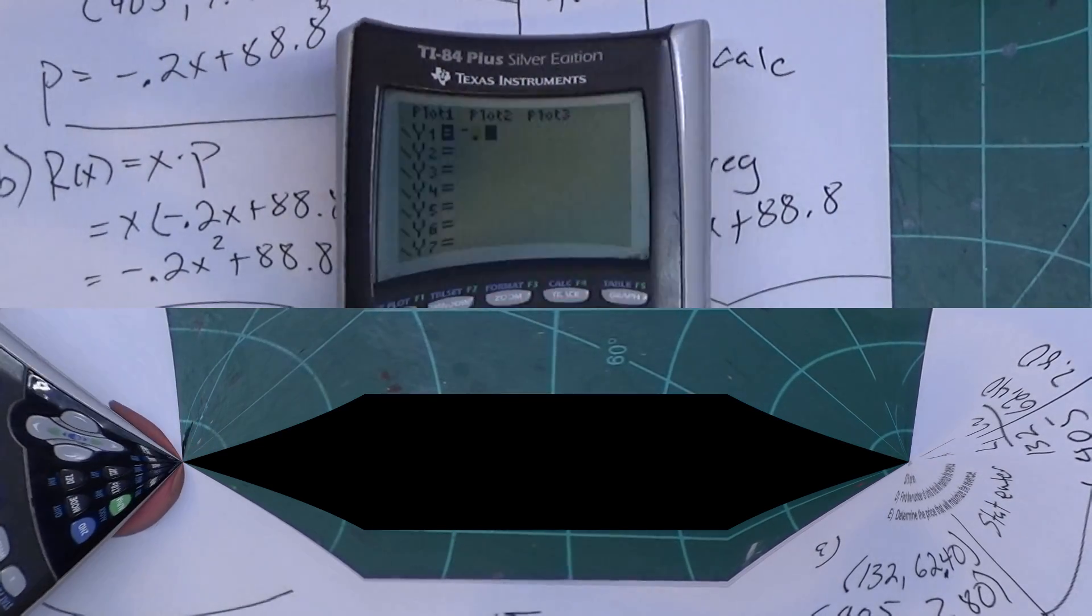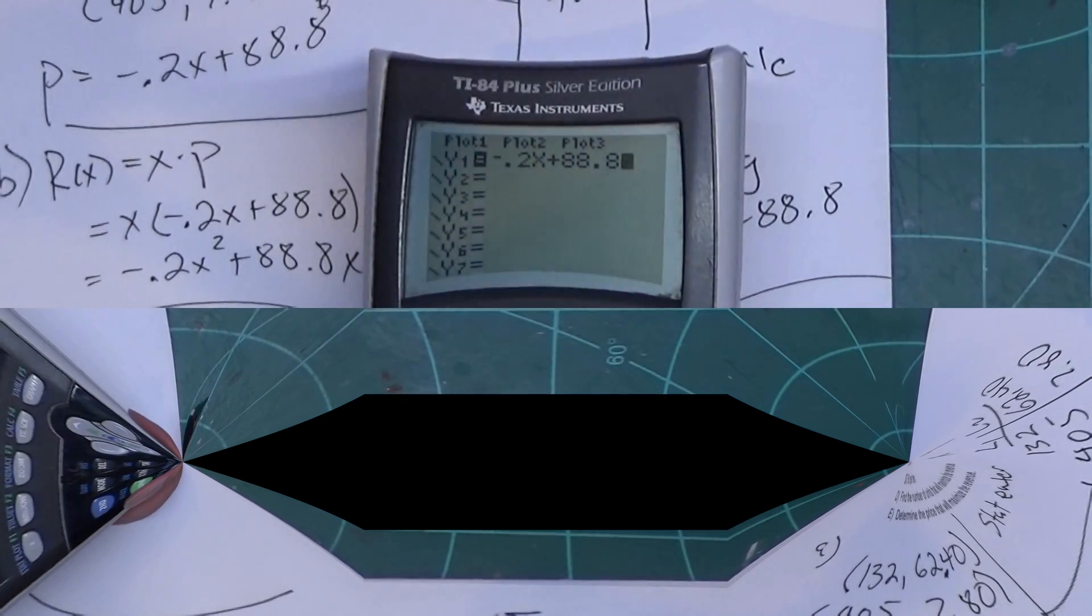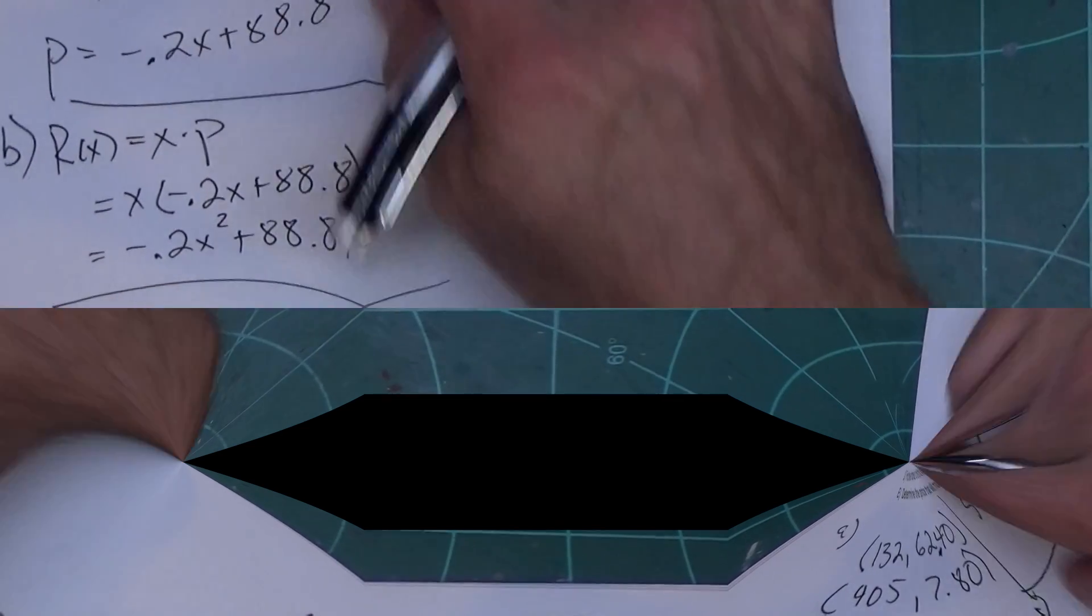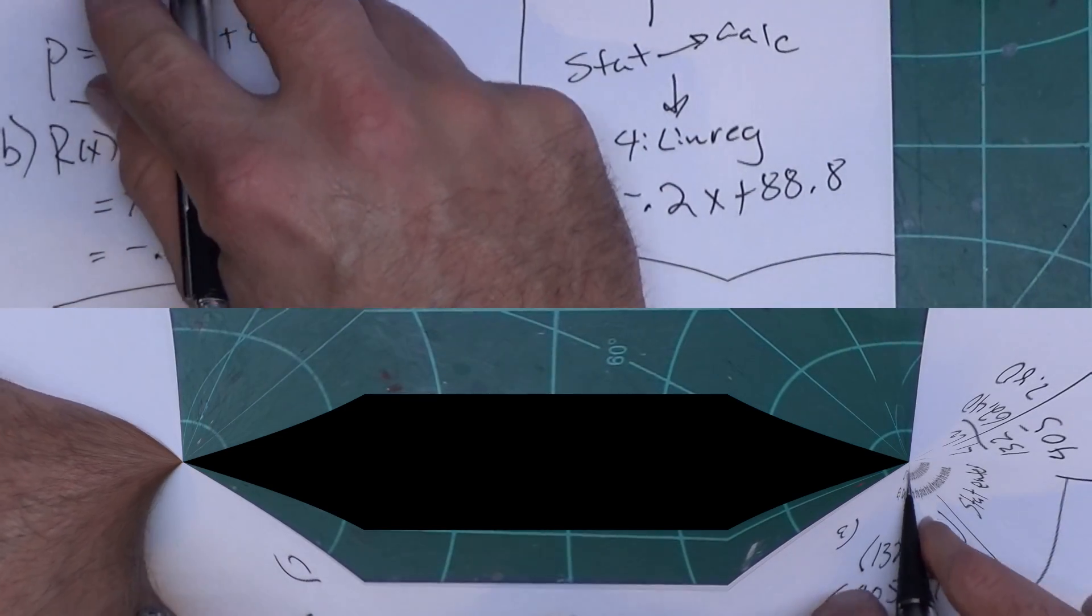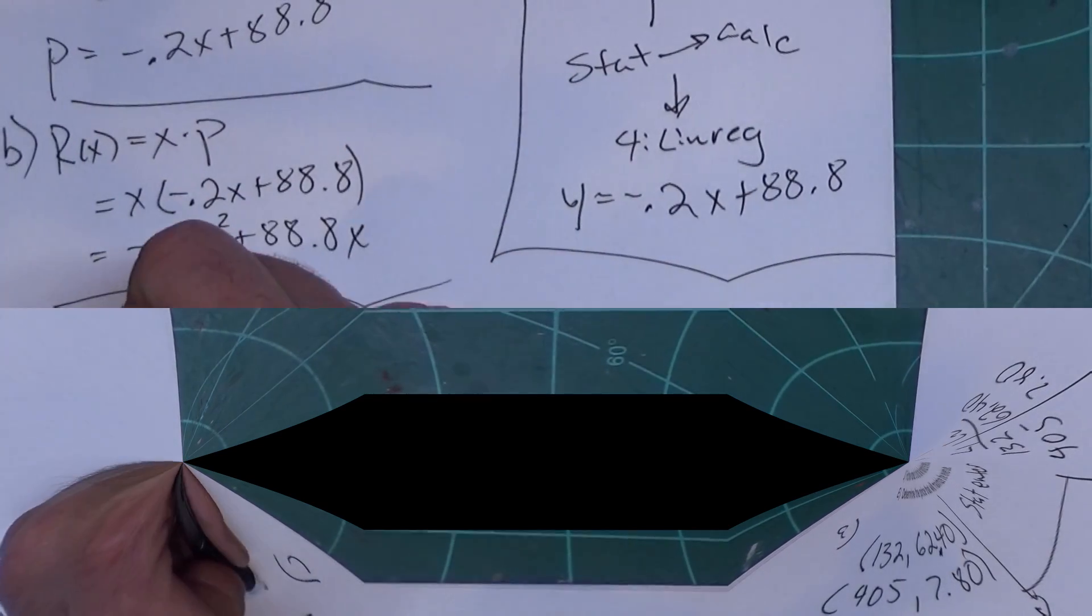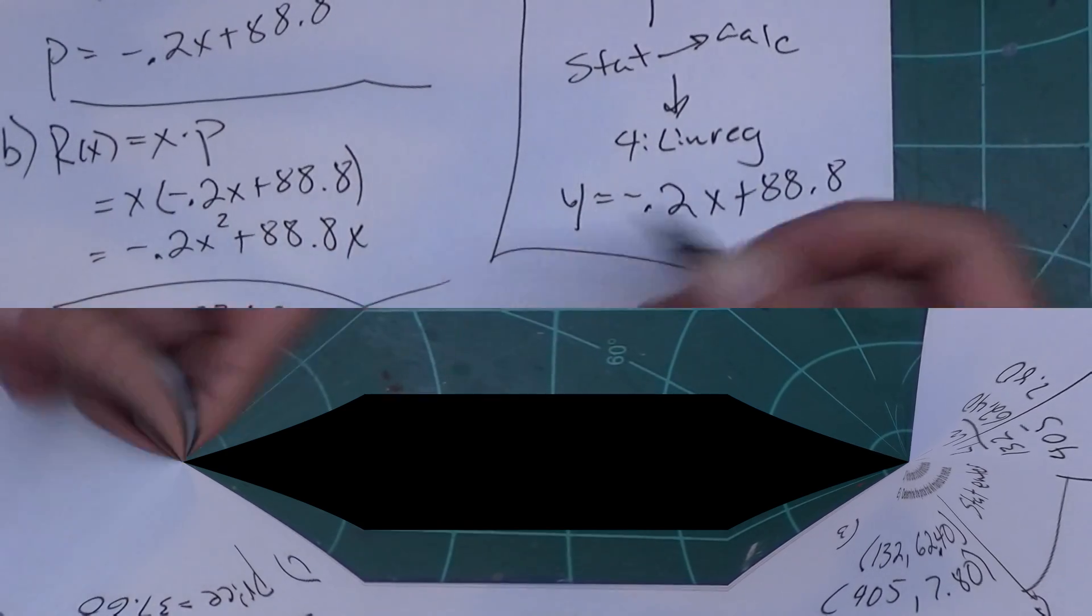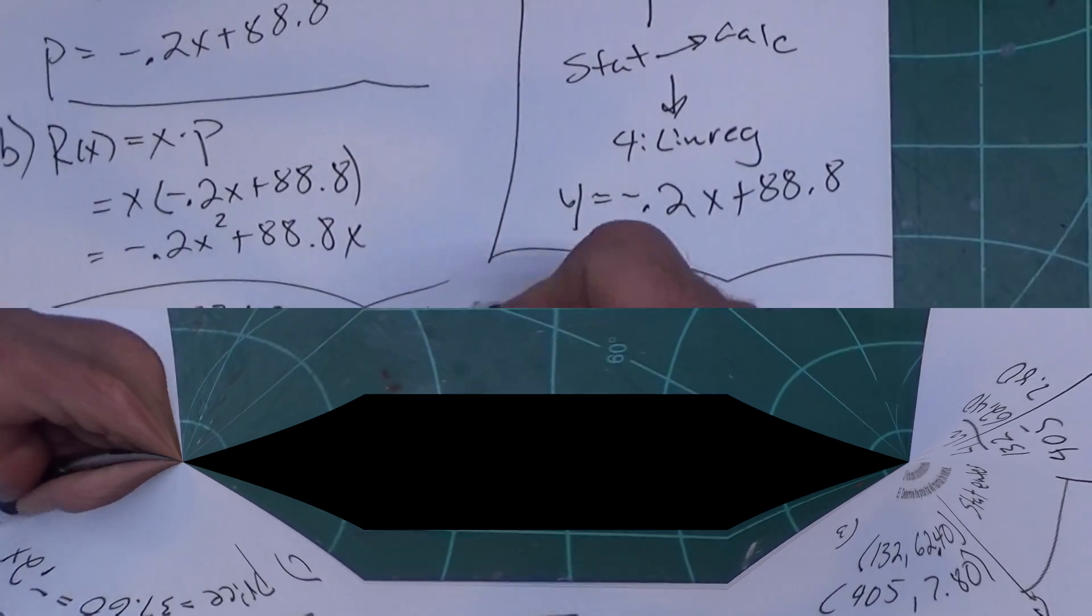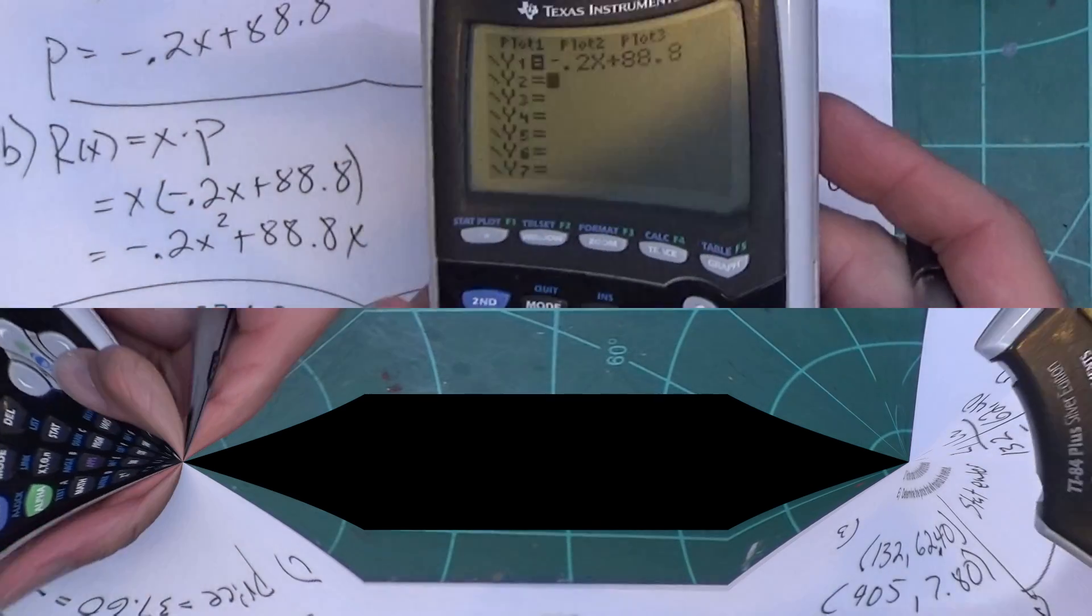Now one of the things I'm going to do is press y equals. I'm going to clear out what's in there because I don't need them. We'll go ahead and put the demand function in y1, so I'm putting negative 0.2x plus 88.8. The reason I'm about to do that is because part C, and it's going off the screen but you can download this and print it from the Google Doc, part C determine the number of units consumers will demand each week when the price is $37.60.